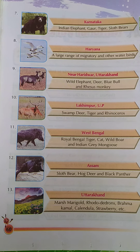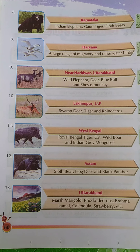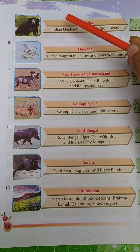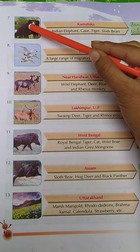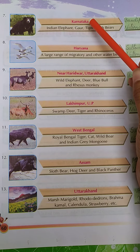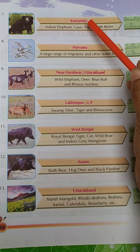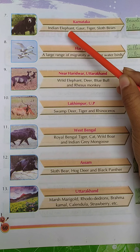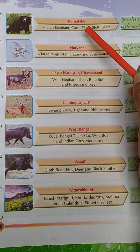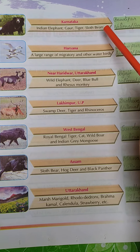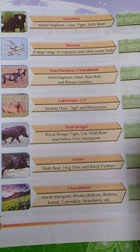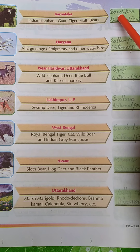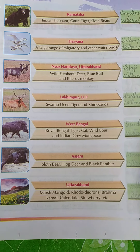Now see the next page, page number 60. Number seven. The state is Karnataka. The animals are Indian elephant, tiger, and sloth bear. The name of this national park is Bandipur National Park.